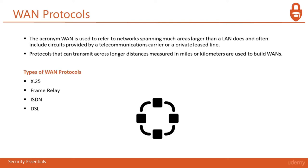Next is WAN protocols. WAN stands for Wide Area Network, referring to networks spanning much larger areas than a LAN, often including circuits provided by a telecommunication carrier or a privately leased line. Protocols that can transmit across longer distances, measured in miles or kilometers, are used to build WANs. When we need to communicate in different locations across longer distances, we use WAN technology. Types of WAN protocols are X.25, Frame Relay, ISDN, and DSL.